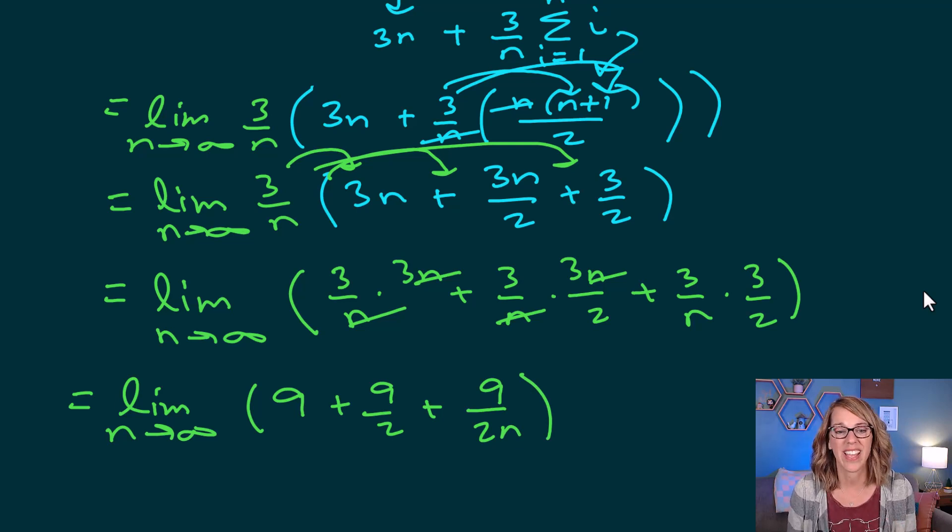Let's apply that limit. So as I apply the limit, as n goes to infinity, 9 does not depend on n. 9 over 2 does not depend on n, but 9 over 2n does. So 9 over 2 times infinity, that goes to 0. And I end up with 9 plus 9 over 2. You can call that 4.5, and I end up with 13.5.